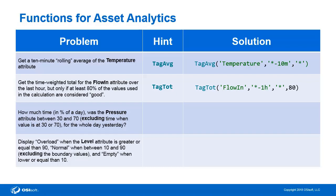The third problem states: how much time, as a percentage of a day, was the pressure attribute between 30 and 70, excluding the time when the value is at 30 or 70, for the whole day yesterday? Here we're going to need to combine two different functions. Our hint shows TimeGT and TimeGE. TimeGT is greater than, and TimeGE is greater than or equal to. Let's take a look at one of those in the Help menu.